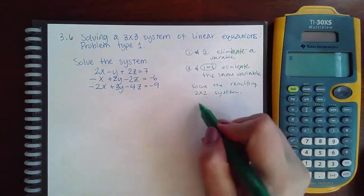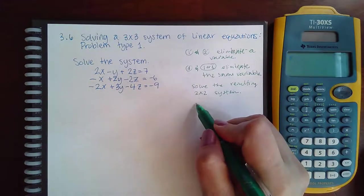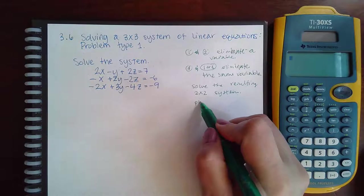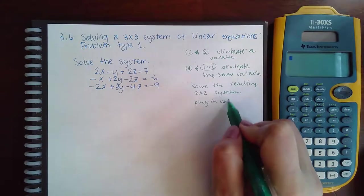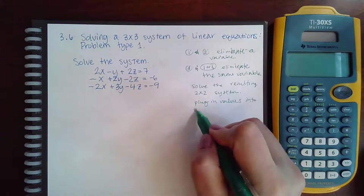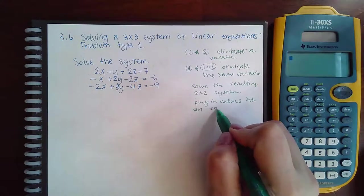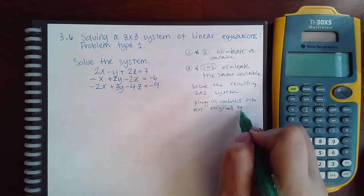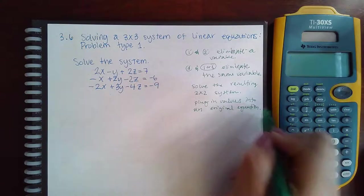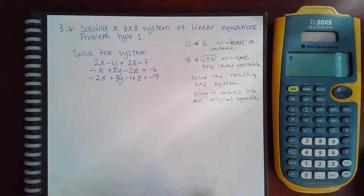So then the next thing you do is solve the resulting 2 by 2 system. And then once you do that, you can go back to an original, plug in values into an original equation. And that will help you find the third value.